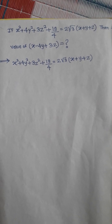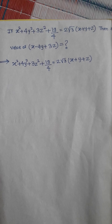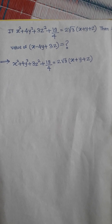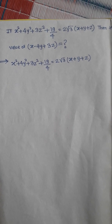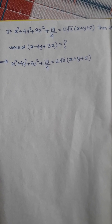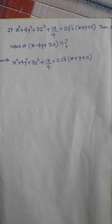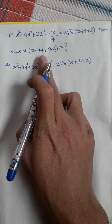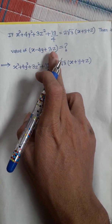Friends, today we will solve this question: if x² + 4y² + 3z² + 19/4 is equal to √3 times (x + y + z), then we want to find x - 4y + 3z.